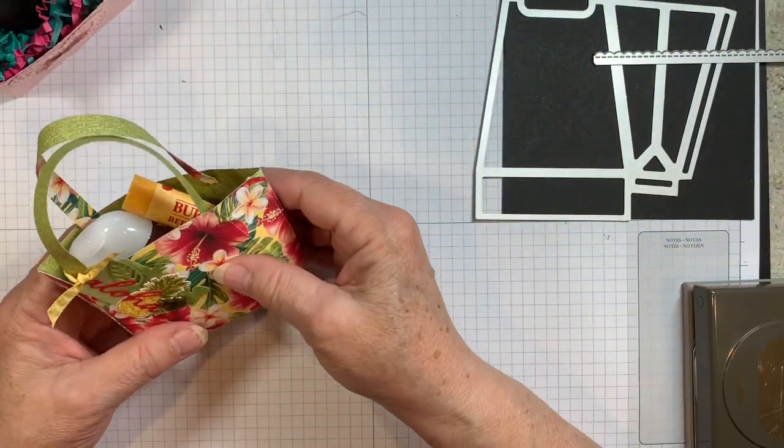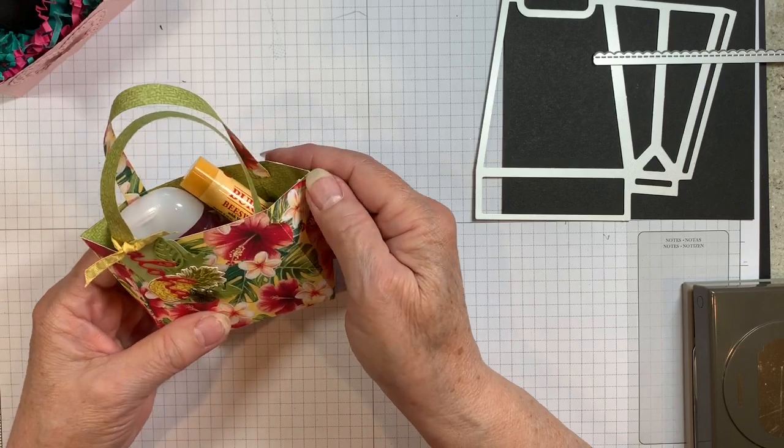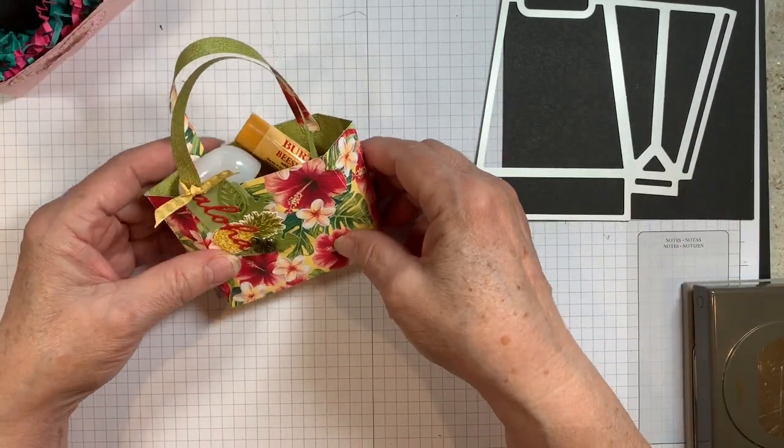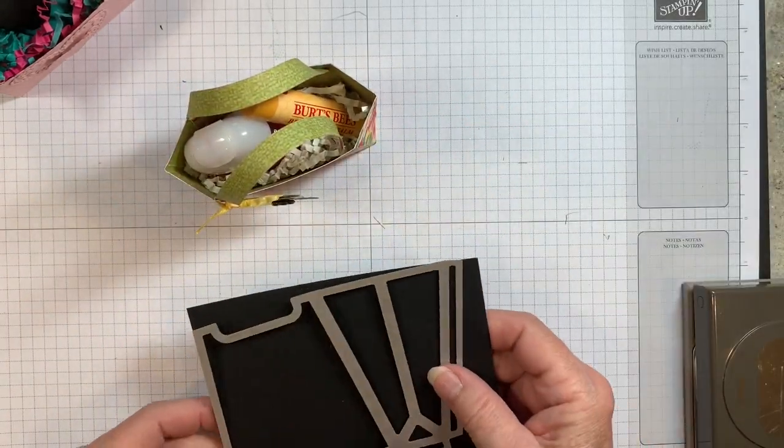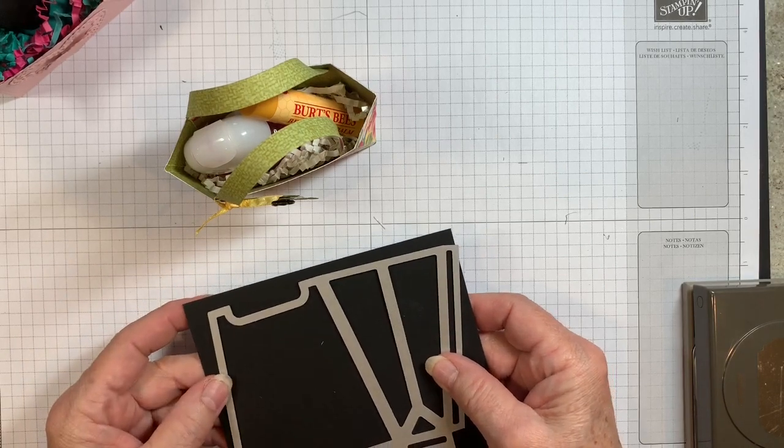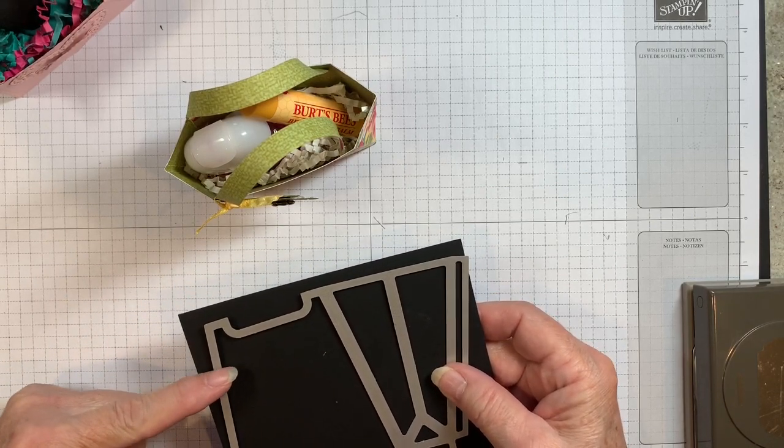And then on this one I'm going to tell you a couple of different ways you can do this. When you're cutting out your DSP, you can either cut your whole piece, two of these out of your DSP and then go over to your trimmer after you cut it out and just trim off the top so you get this type of look